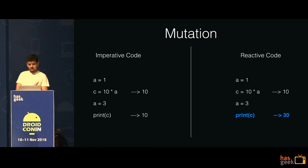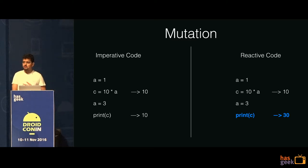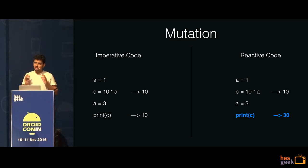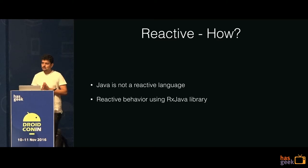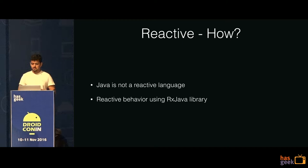This kind of solves our refresh chain problem, because now we don't need to think about refreshing c. We just change a, and based on the definition of c, it will get updated automatically. We want this behavior in Java, but Java does not have this behavior. That is where RxJava comes in. RxJava is a library through which you can get this reactive behavior.